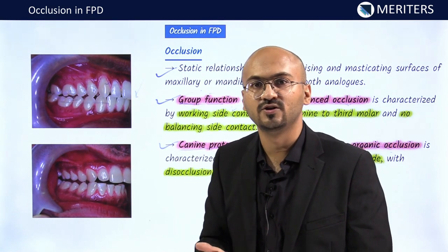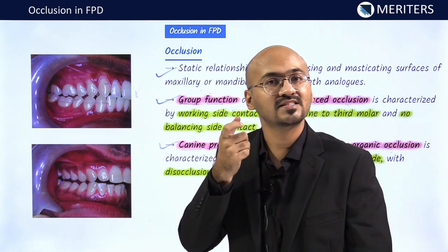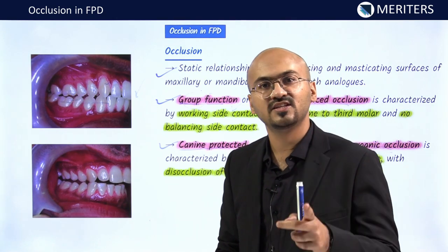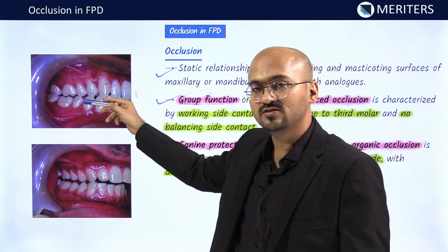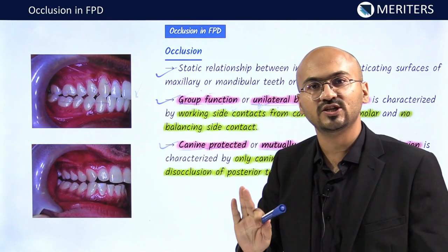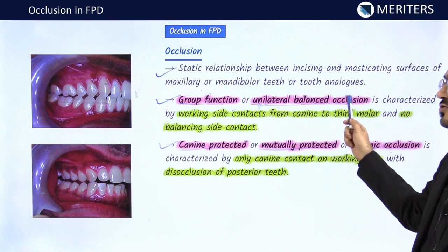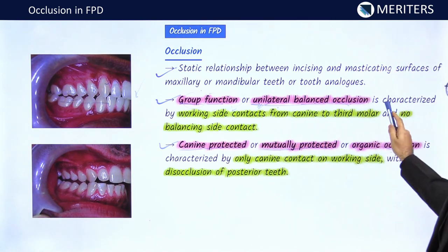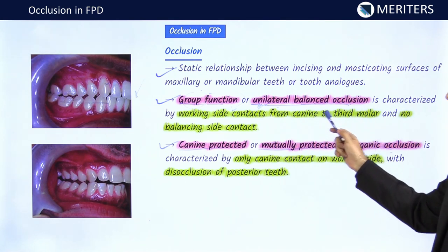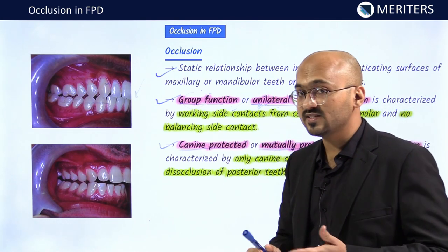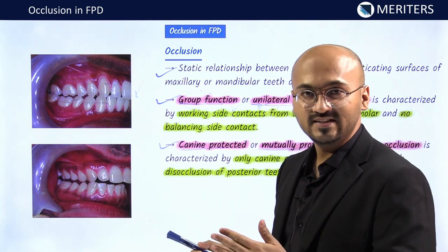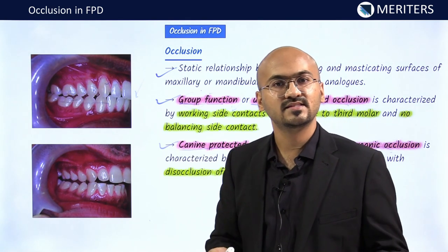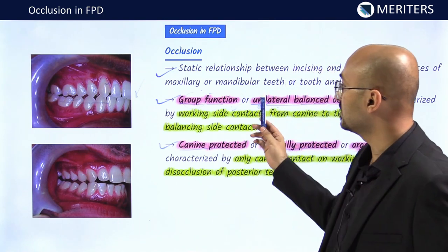If you take your jaw to the right side, you will feel some teeth touching on that side while the other teeth are not touching — if they are, it is pathologic. On one side there is contact, on the other side there is none. That is why it is called unilateral balanced occlusion or group function occlusion. Technically, it is characterized by working side contacts from canine to third molar and no balancing side contact.